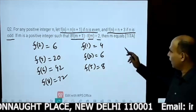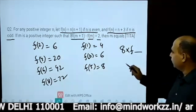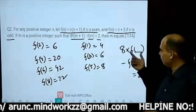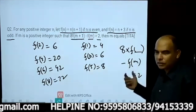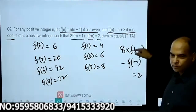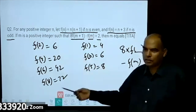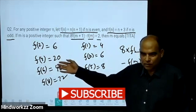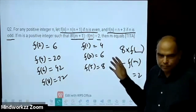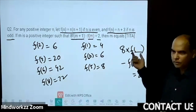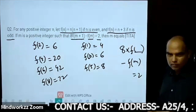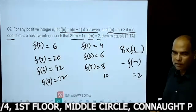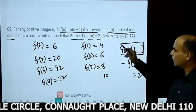Right now you want a situation where 8 times f(m+1) minus f(m) equals 2. That means the function is amplified 8 times, you subtract, and get 2. The difference between m and m+1 is just 1, so clearly it can't be 8 times this. It's going to be 8 times the series of even integers: 4, 6, 8, 10 — so this value is 8×4, 8×6, 8×8, etc.